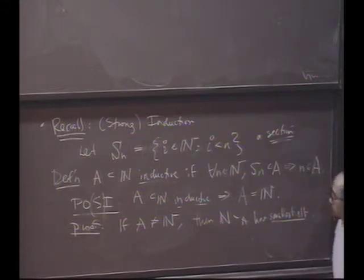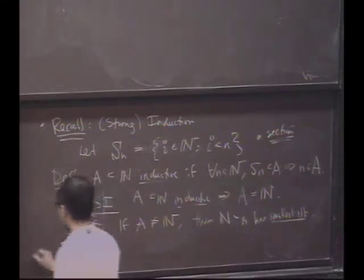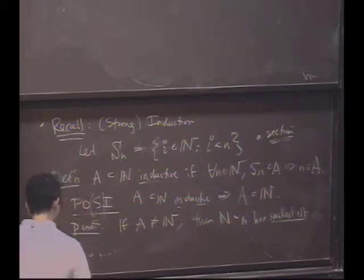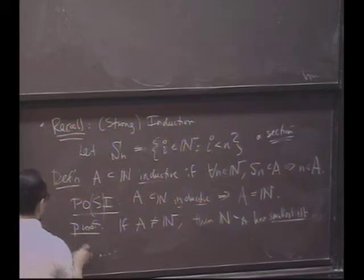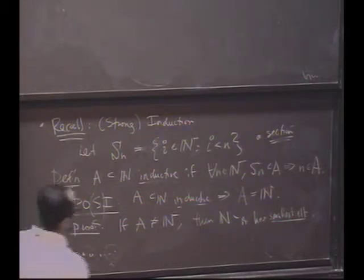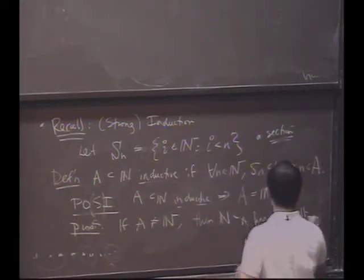Then N minus A has a smallest element. Oh, okay. Right? So that's our picture here, right? This is our set. And if I look at all the things that are not in the set, let's say this is A. All the things, there's a smallest thing. What's the contradiction?